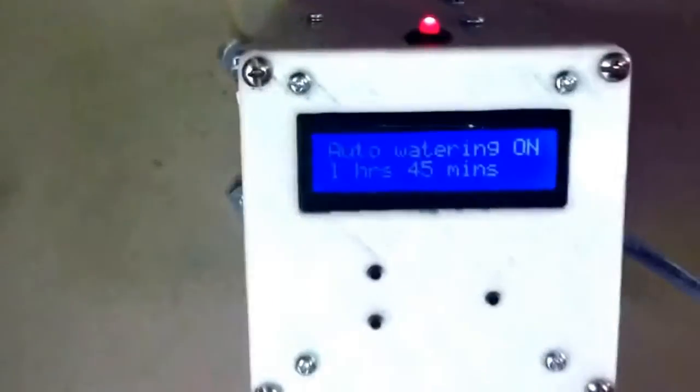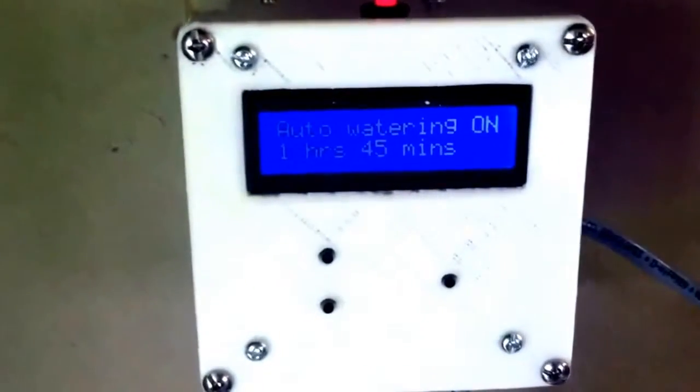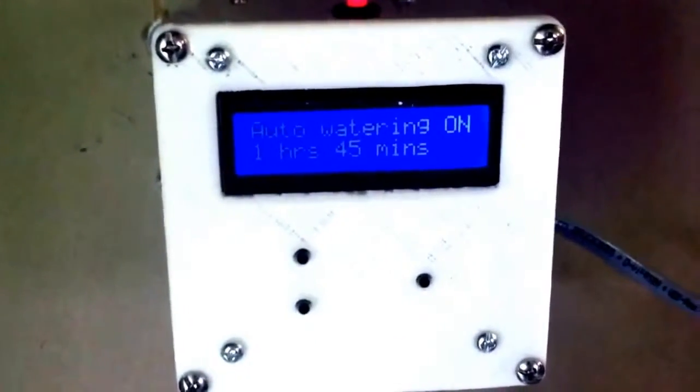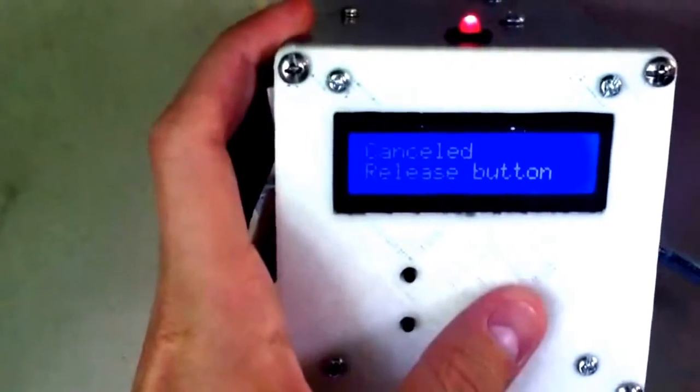Light came on. Valve's open. Water's flowing. This counts down as each minute goes by. Once it reaches zero, everything turns off. Or you could also press the button again to cancel it.